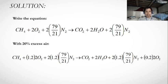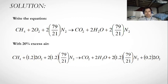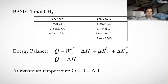With 20 percent excess air, we multiply the stoichiometric oxygen by 1.2. Since nitrogen and oxygen together make up air, in the product we have 20 percent excess oxygen — that is 0.20 times the stoichiometric moles of oxygen appearing in the product stream.